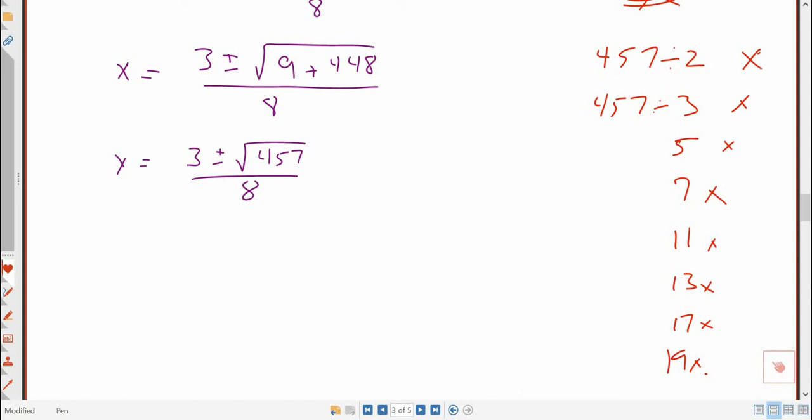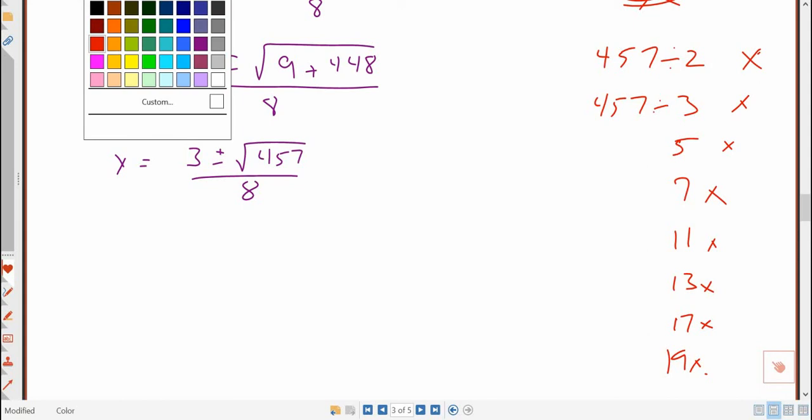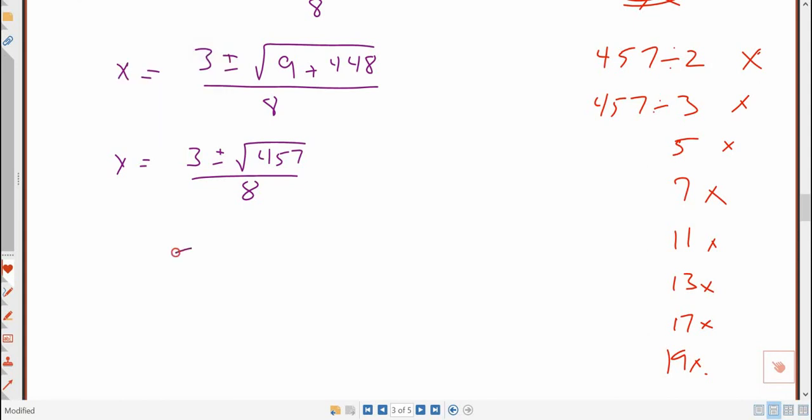Now, remember, this plus and minus means I actually have two answers, right? It's 3 plus square root of 457 over 8, and the other one is 3 minus square root of 457 over 8.